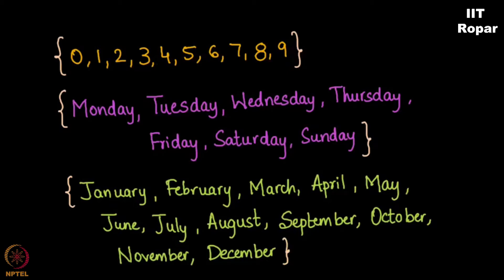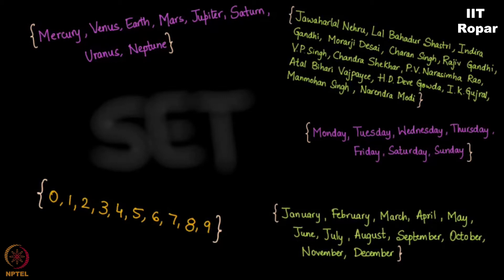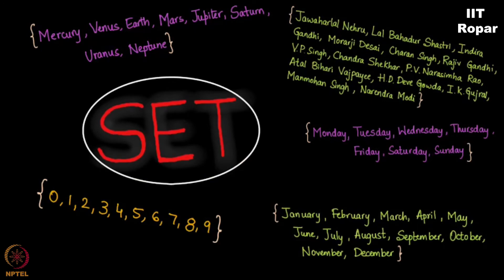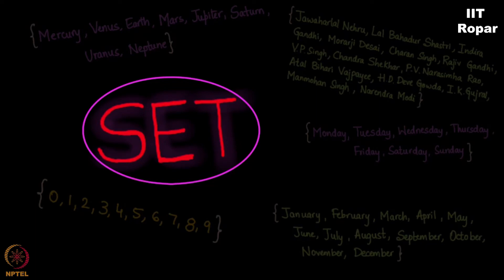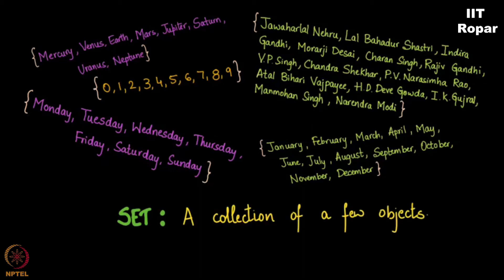Do you see what is in common in whatever I wrote so far? They all are called sets in the language of mathematics. You see, certain things in math is best left undefined. Set is one such thing. But for completeness sake we may have to define what is a set. A set as you can see above is a collection, you collect a few objects - collection of a few objects.